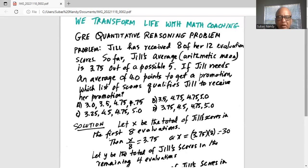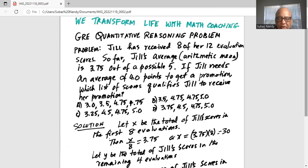Let x be the total of Jill's scores in the first 8 evaluations, so x divided by 8 is equal to 3.75. Then we'll multiply by 8 on both sides to get x equal to 8 times 3.75 or 30.